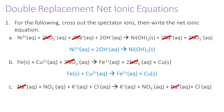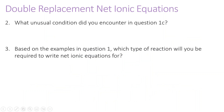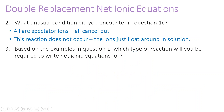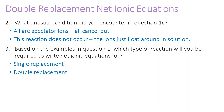For this last one, we're going to see that everything cancels. So this is what we call no reaction — nothing happens here. All of these ions just float around in the water together, not forming any new compounds. The unusual condition in question 1C was that everything was spectator ions — they all canceled out, so this reaction didn't occur. Based on the examples in question 1, we need to write net ionic equations for single replacement and double replacement reactions.